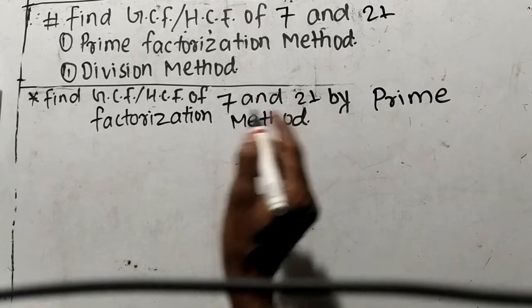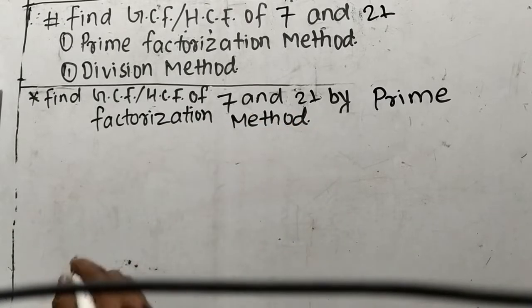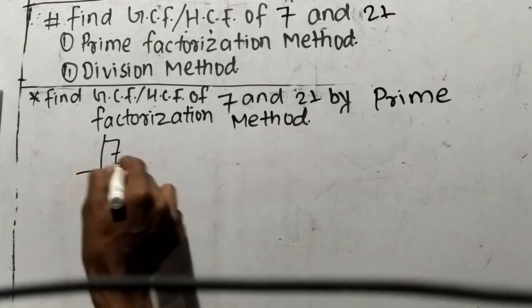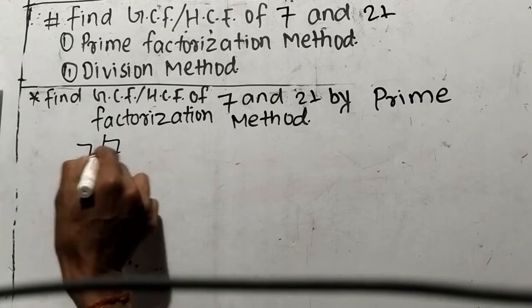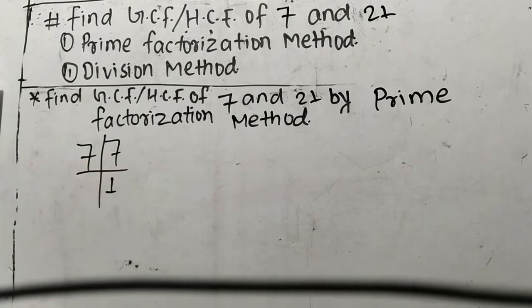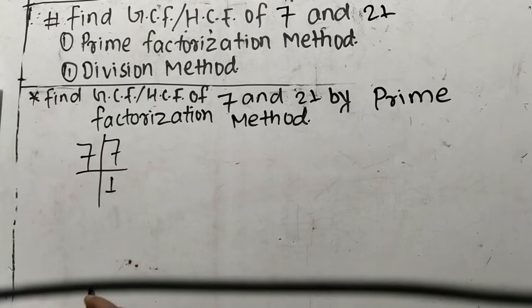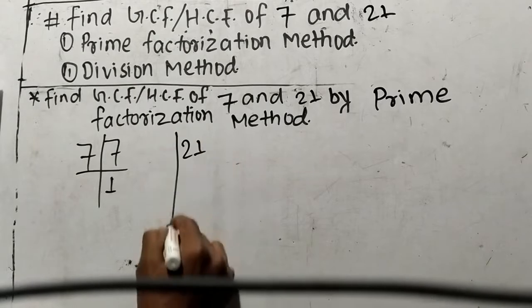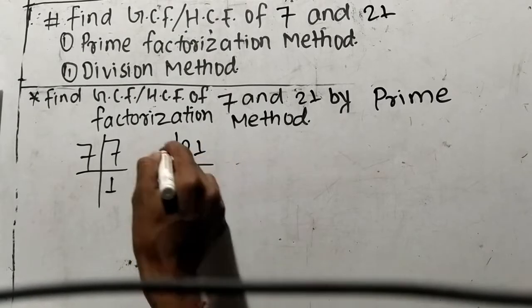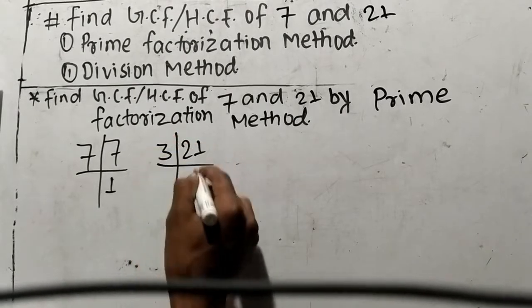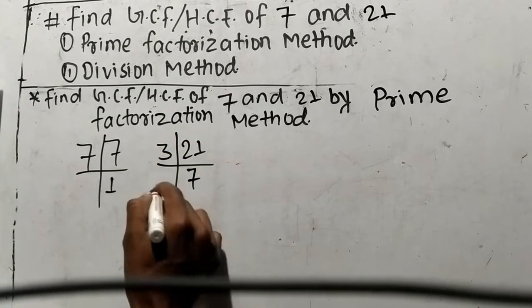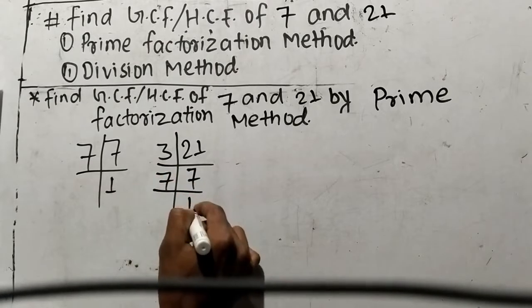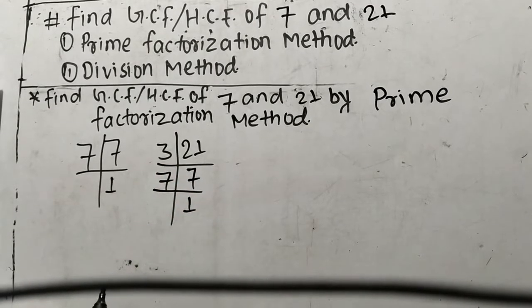Our numbers are 7 and 21. Let's factorize 7 — it is 7 times 1, which means it is 7. In the same way we shall factorize 21 — it is 3 times 7, which equals 21.